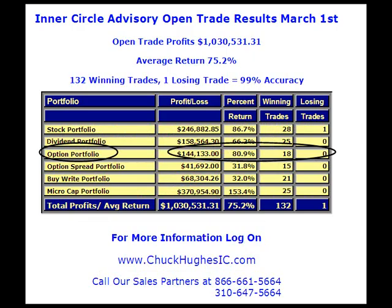I've been using the high accuracy option trade selection process to select option trades for my Inner Circle advisory service. As of March 1st, the option portfolio has $144,000 in open trade profits, an 80% average return, 18 winning trades, and no losing trades. The trade selection process has been performing well. If you'd like updated profit results for the option portfolio, just log on to chuckhughesic.com. This is Chuck Hughes — thank you for listening, and I wish you the best in investing success.